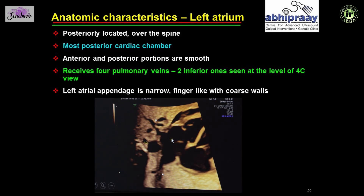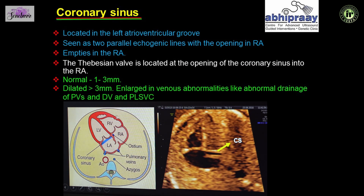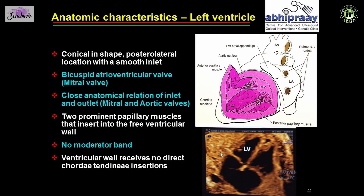The left atrial appendage is narrower than the right one. Looking at the normal coronary sinus, it is situated behind the left AV groove and is seen as two parallel echogenic lines opening into the right atrium. To identify it, take a section posterior to the mitral valve — the coronary sinus normally measures between 1 and 3 mm. If it is larger than 3 mm, it is dilated and you must look for a venous abnormality such as a persistent left SVC or pulmonary venous drainage abnormalities.